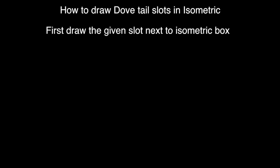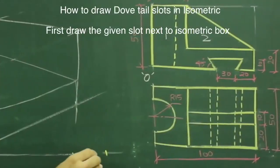How to draw dovetail slots in isometric. First, draw the given slot next to the isometric box.